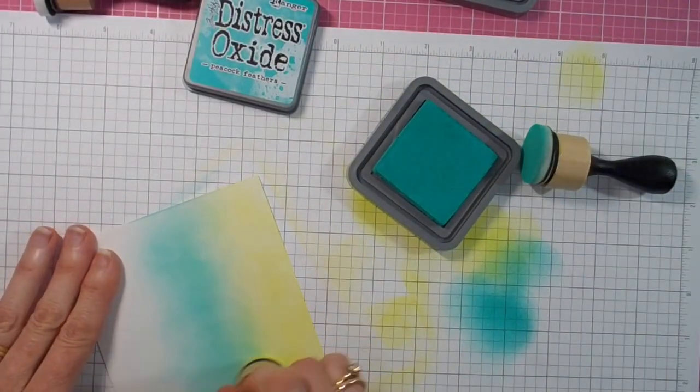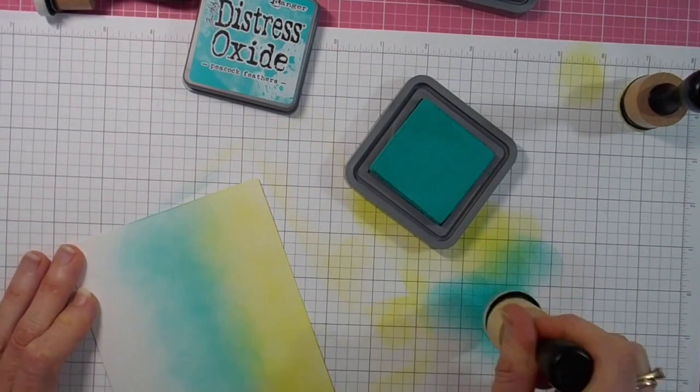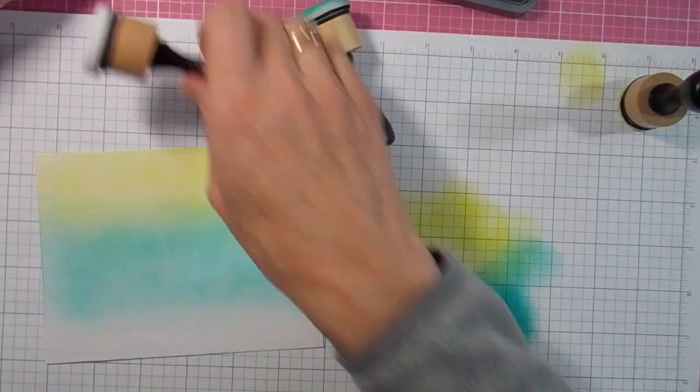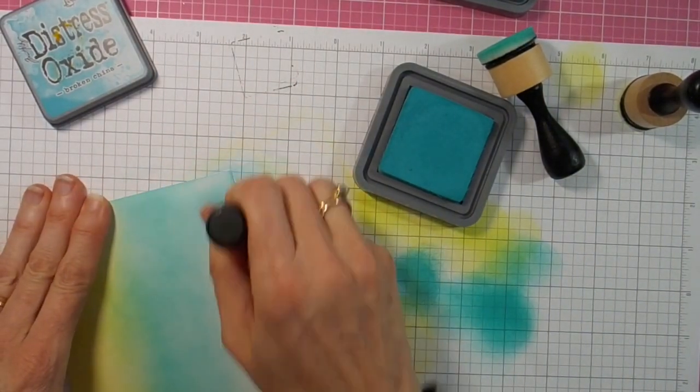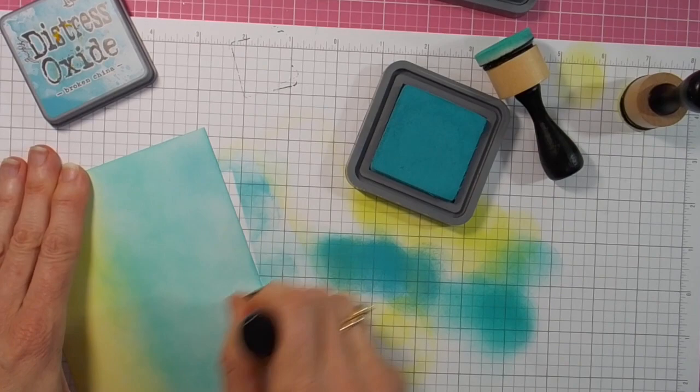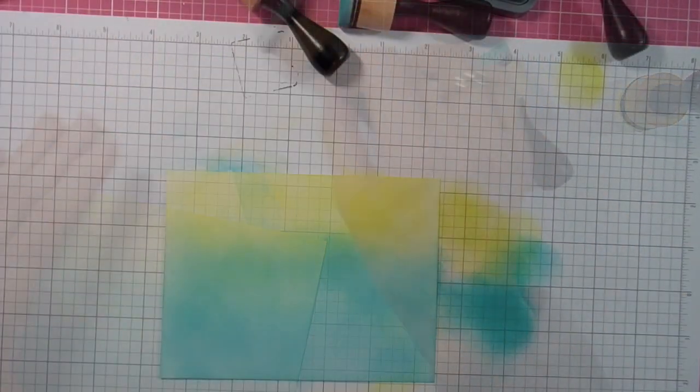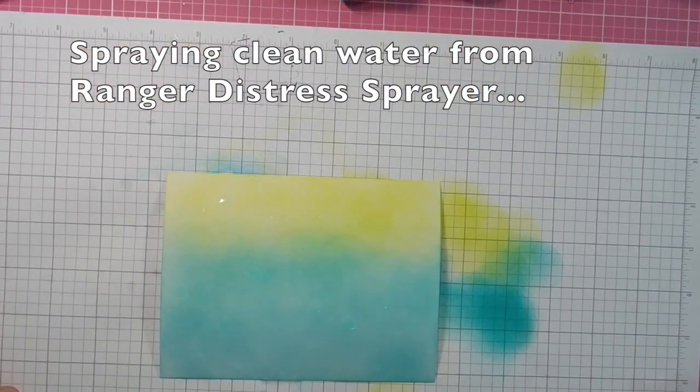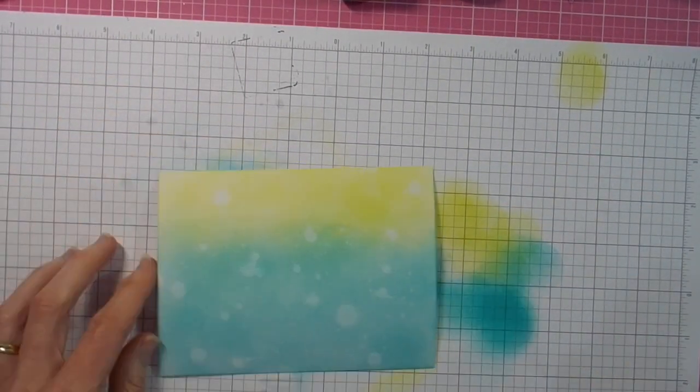So I'm creating here the watery background for the little mermaids to be swimming in, and just covering the card with a fairly loose ink blending. I'm not stressing too much about any darker areas or bits that don't blend quite as perfectly as I might normally like, because I am going to cover them with the stencil and you'll see what I mean in a minute. That does change the look.